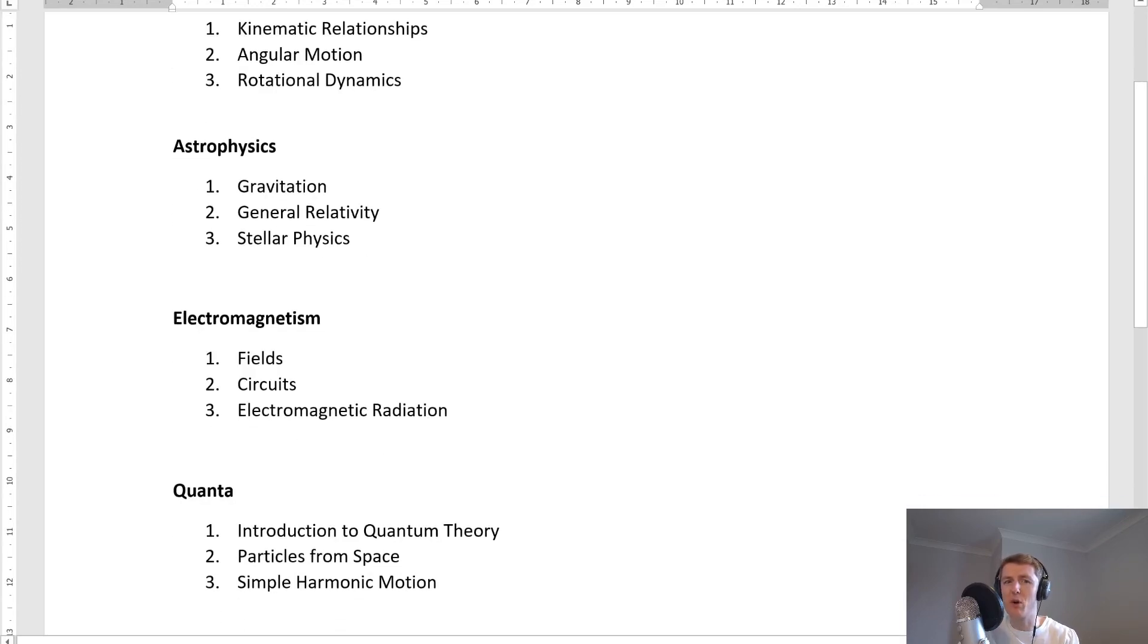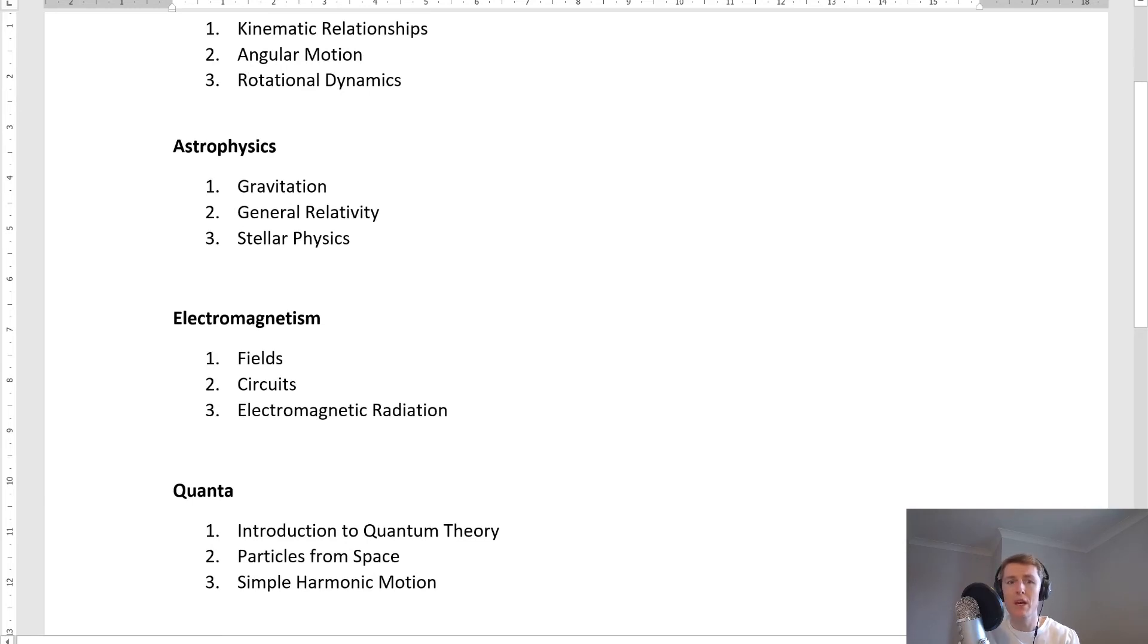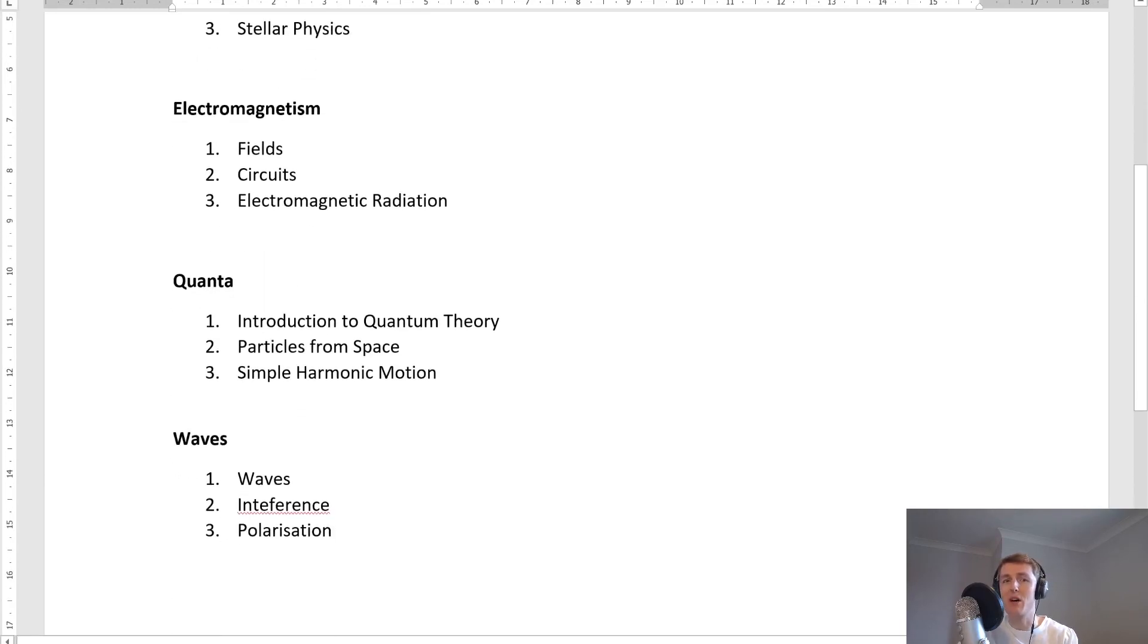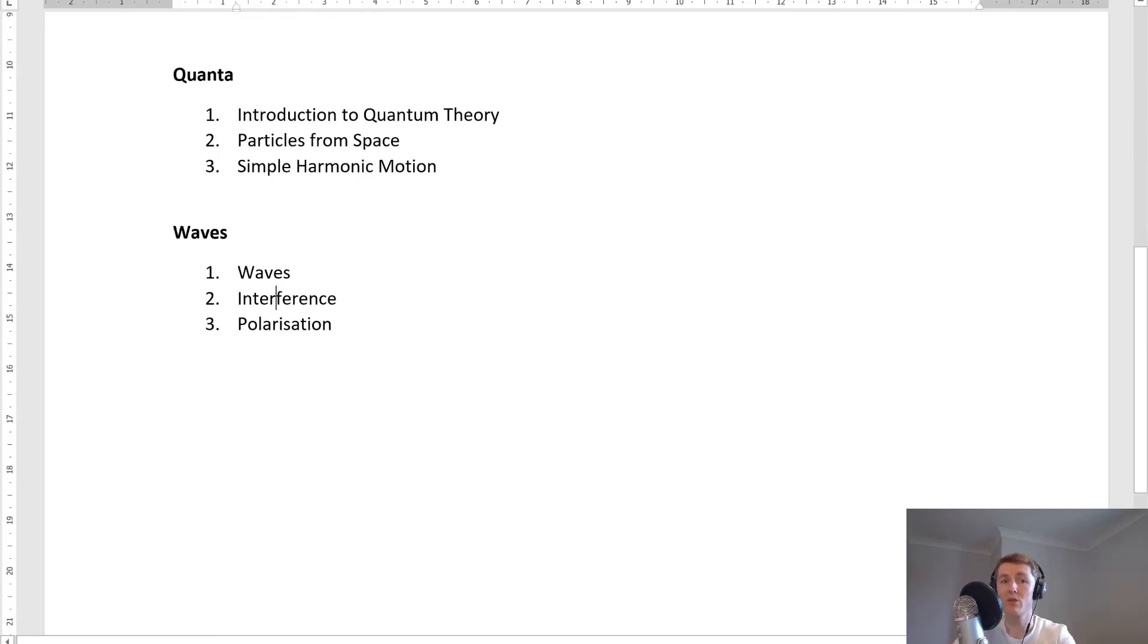Astrophysics is made up of gravitation, general relativity and stellar physics. Electromagnetism, this is made up of fields, circuits and electromagnetic radiation. Quanta, you'll see contains introduction to quantum theory, particles from space and simple harmonic motion.